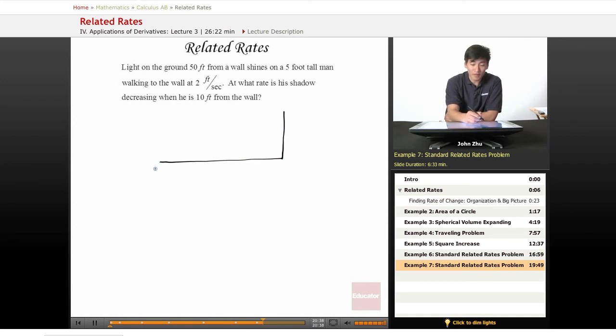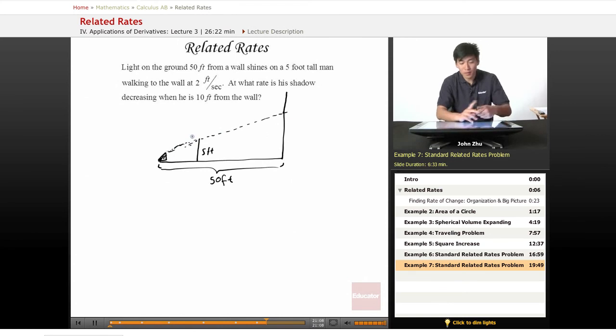Light on the ground, 50 feet from a wall. So here's the light. 50 feet from the wall. Shines on a five foot tall man. So here's our five foot tall man. It shines his shadow onto the wall. Here's the wall, really, really tall.